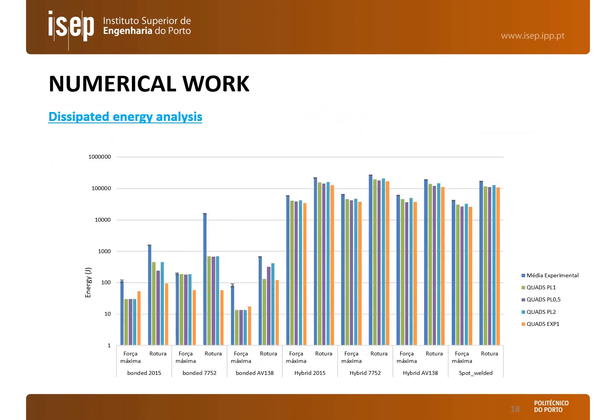This slide presents the dissipated energy analysis. For each joint, both numerically and experimentally, the dissipated energy was defined as the area under the P-delta curves. One can verify that the numerical values of dissipated energy are lower than the experimental ones. Nevertheless, for the hybrid joints, similar results were found. These deviations are due to the effect caused by machine compliance, which is prone to produce higher displacements until joint failure.